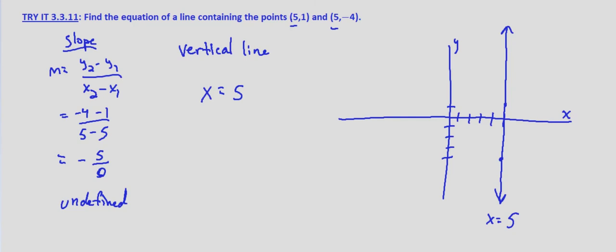Now what we should notice is a trend the more of these problems that we do. So any time we have two points of a line and the x values are the same, it's going to be x equals x1, which equals x2, which in this case is x equals 5.